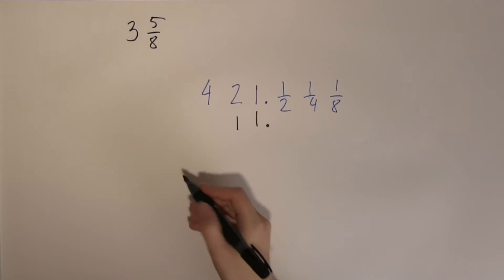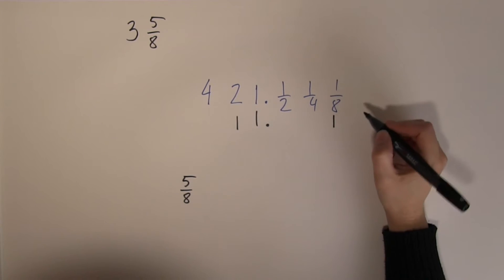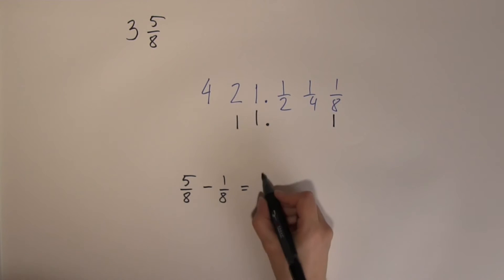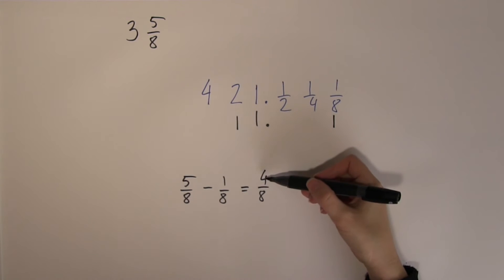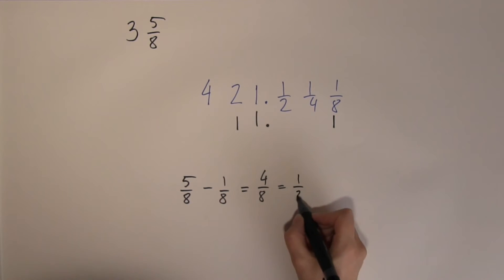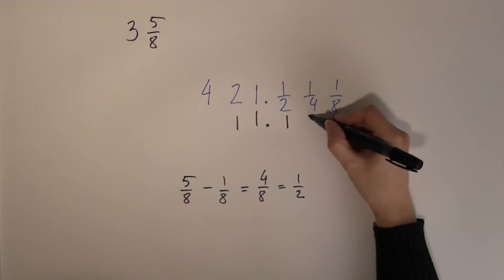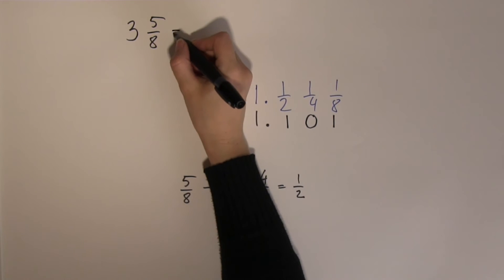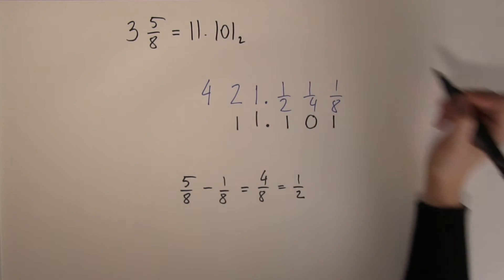So let's see what happens with the 5 eighths. I can use up one of the eighths, but only one of them. What happens if I take an eighth away from the 5 eighths? I have 4 eighths left. Now that's handy, because any fraction that has twice as much at the bottom as at the top always cancels down to a half. So the remainder here is just a half. That means I need a placeholder 0 here. So 3 and 5 eighths in decimal is the same as 11 radix point 101 in binary.